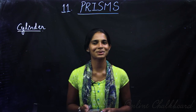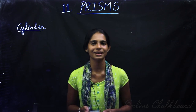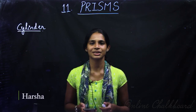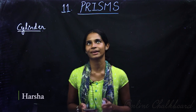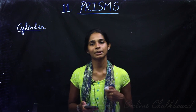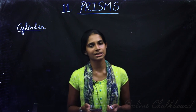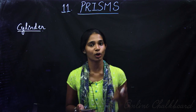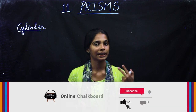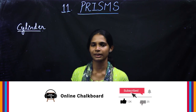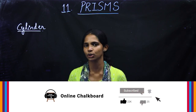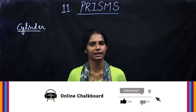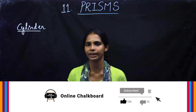Hi friends, welcome back to Online Chalkboard. Now we are doing chapter number 11. We are doing prisms. In previous classes, we covered volume, area, lateral surface area, and total surface area. We are doing a lot of things here.